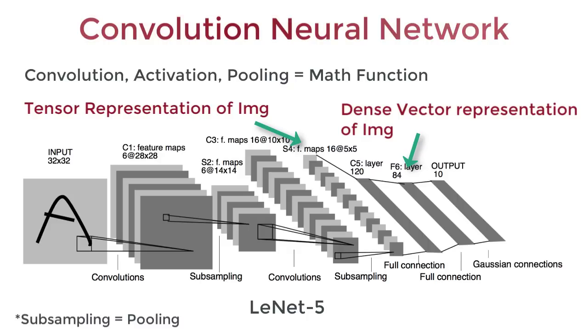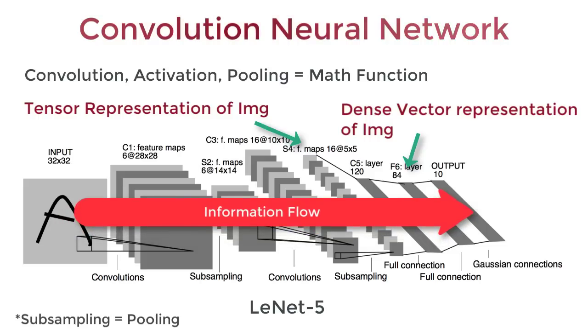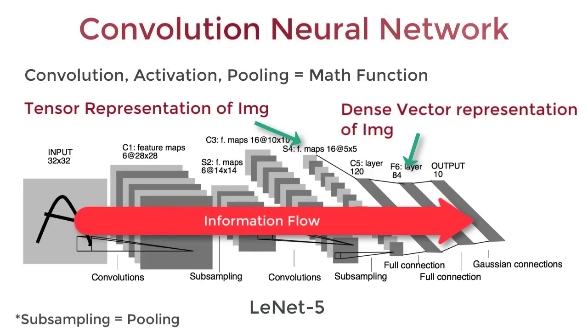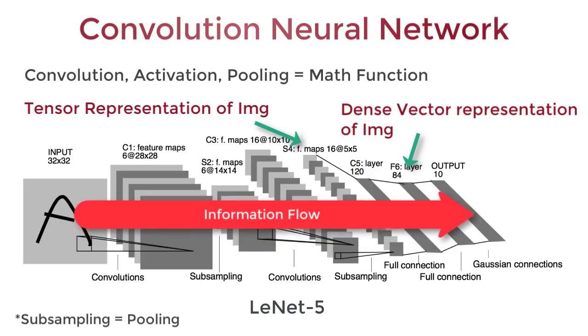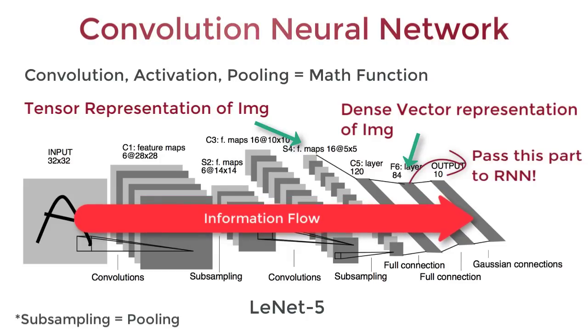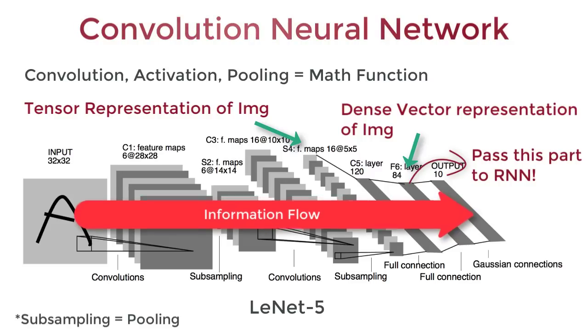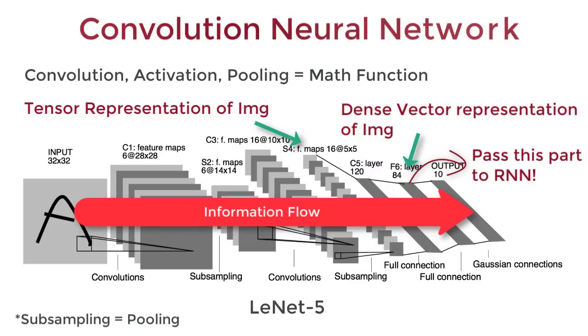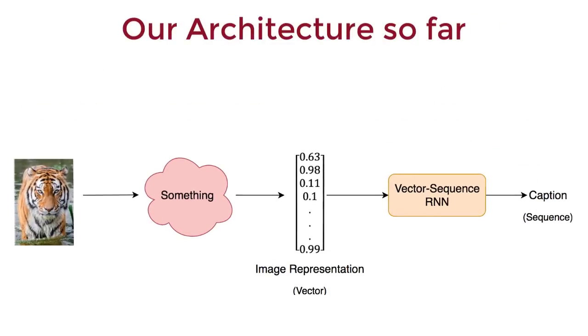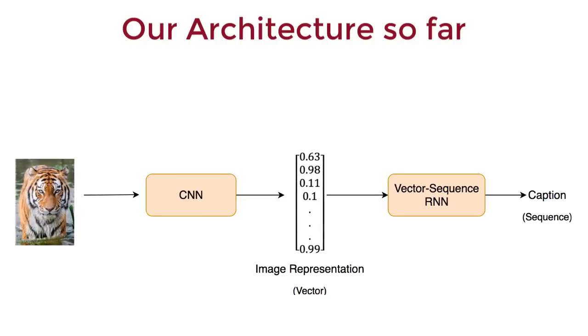This holds true for any network where we have a sequential flow of information, that is, where all information passes through the layers. So, we can pass an image into a CNN to get a dense vector representation of the image. Then we can pass this dense vector to an RNN to generate a sequence, the sentence or phrase that describes the image. So, nice, our architecture is now taking some form. But there are some tweaks we can still do.